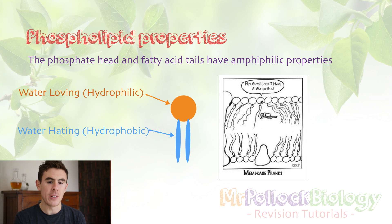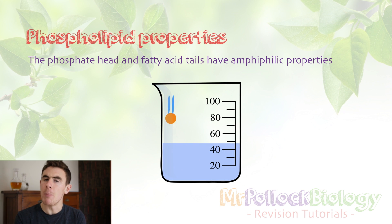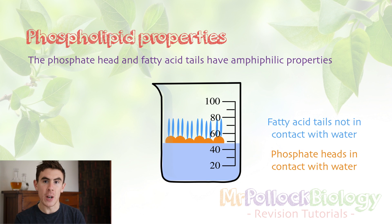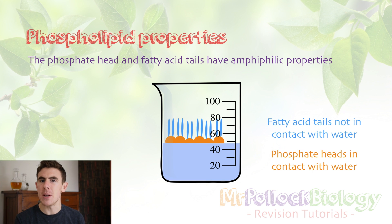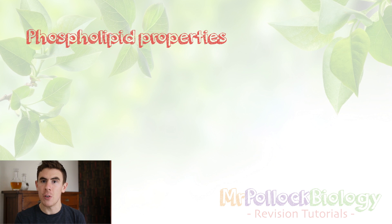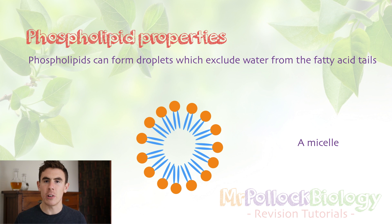If we imagine a big beaker of water and we drop a bunch of phospholipids into it, we would see that the fatty acid tails, because they're hydrophobic, want to get away from the water, whereas the phosphate heads, which are hydrophilic, are quite happy to sit there and float around. What we see is that if we put only a few phospholipids in water, they form structures called micelles, where water is excluded from the fatty acid tails as the phospholipids form a ring structure.